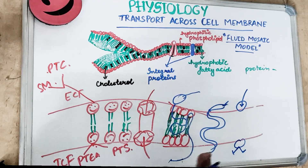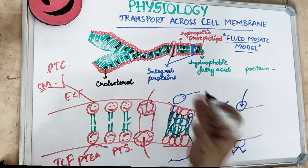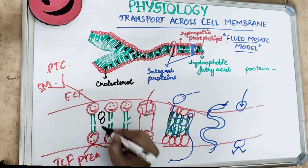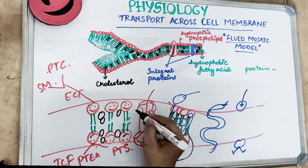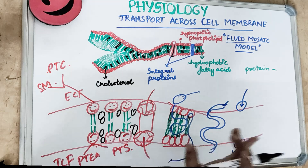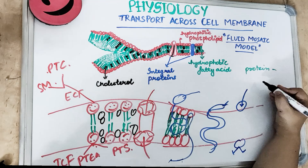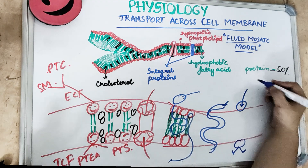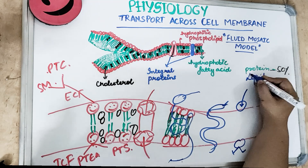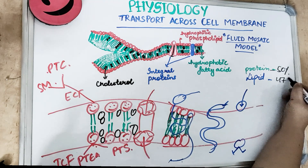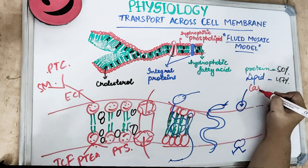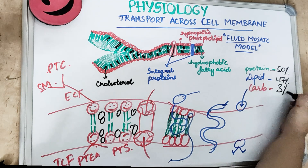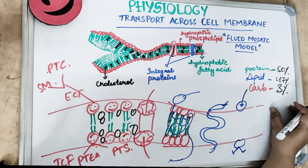The cell membrane also contains cholesterol - you can see the black dots in between the cell membrane. The cell membrane consists mainly of three components: proteins which make up 50 percent, lipids which make up 47 percent, and carbohydrates which make up only 3 percent - a very small amount.